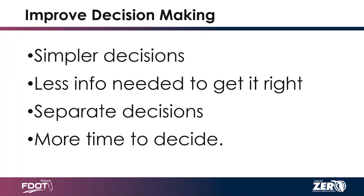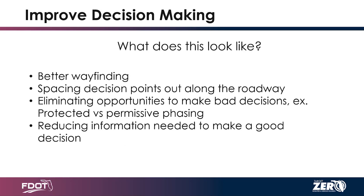Our next idea is improving decision making. We do this with simpler decisions — reducing the amount of information needed to get the decision right, separating decisions so we only have to make one at a time, or even increasing the distance between them and giving people more time to decide. It's not as time sensitive. There's a certain amount of reaction time that people can have, and people aren't always good at making a logical choice.